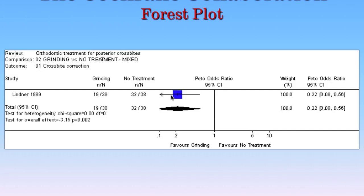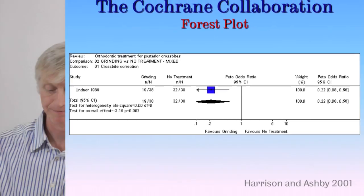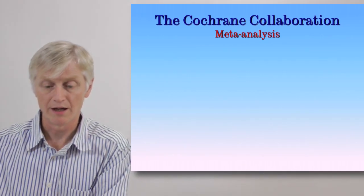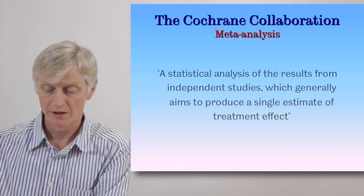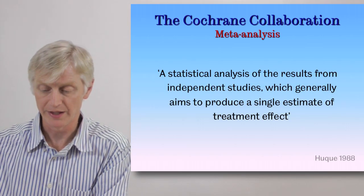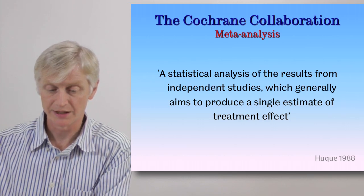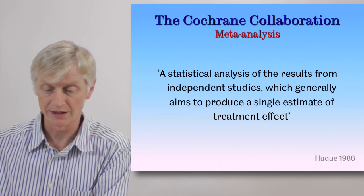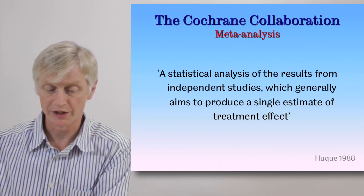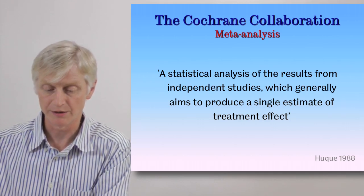We can say that the data from this study suggest that grinding is an effective way of reducing the incidence of posterior crossbites in the permanent dentition. However, it is only one study, carried out in one centre, in one country, by one individual. In order to confirm that finding, we would have to carry out more studies — and that's where a meta-analysis comes in. A meta-analysis, as defined by Huck in 1988, is a statistical analysis of the results from independent studies which generally aims to produce a single estimate of treatment effect.